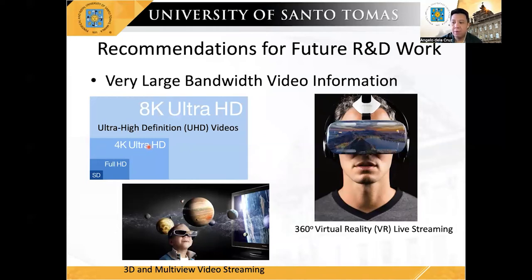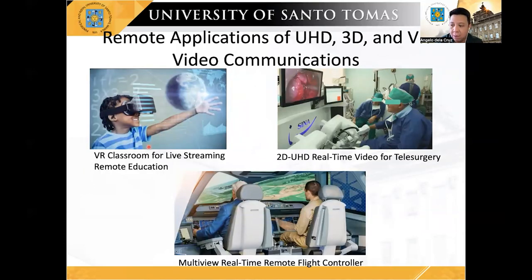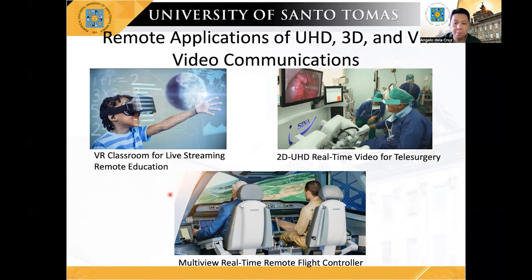It is undeniable that the future of entertainment and communication is in the direction of super high definition and multi-view video streaming. This poses a great challenge due to its inherent huge bandwidth requirements to store and transmit compressed video information. Though HEVC is specifically made to compress high-resolution sequences, the resilience of compressed video information over the error-prone band-limited channel is yet to be explored. Suppose these multimedia streaming technologies are applied in a virtual reality classroom, live streaming, UHD real-time tele-surgery, or a real-time multi-view remote control application such as flight control. In that case, this highly compressed video information will be subjected to channel impairments during transmission, possibly degrading the decoded video quality experienced by the receiving end.